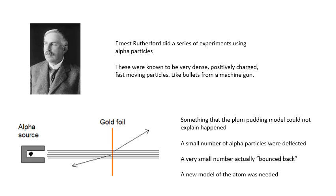This is why the model evolves - you come up with evidence that the old model can't explain, so you need a new model. Basically what happened was a small number of alpha particles were deflected, they didn't carry on in a straight path. And a very small number actually bounced back, back in the direction that they came from. And so we needed a new model of the atom.